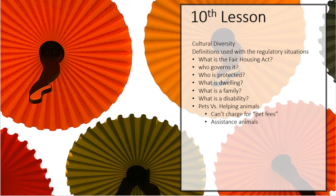In 1988 they amended the Fair Housing Act one more time to include familial status and disability. So you currently have seven federally protected classes: race, color, religion, national origin, sex, familial status, and disability. States can be more restrictive than federal law but cannot be less restrictive.